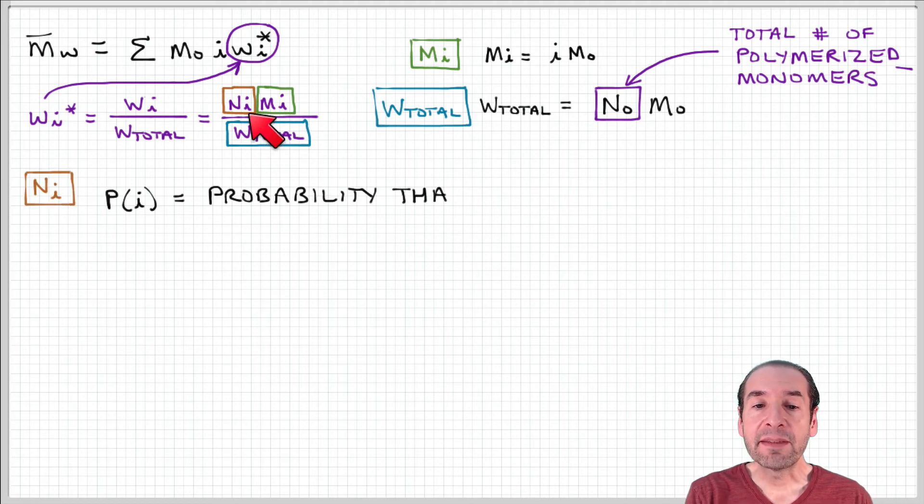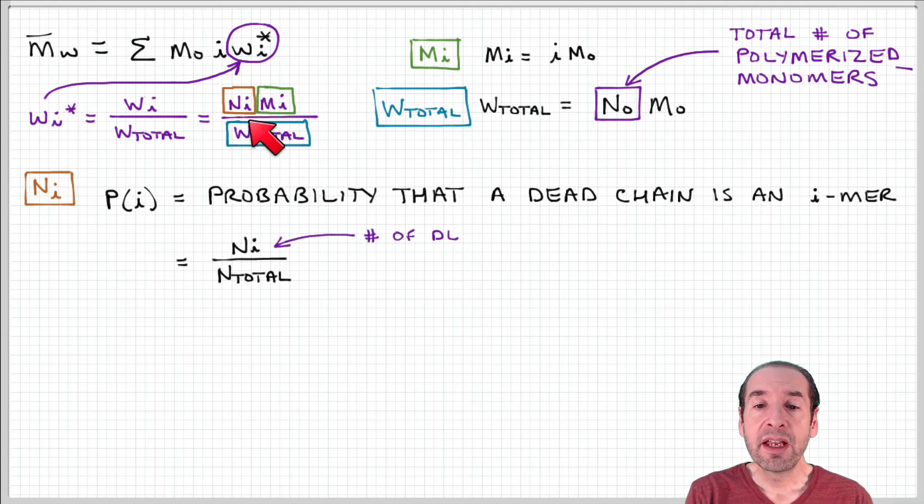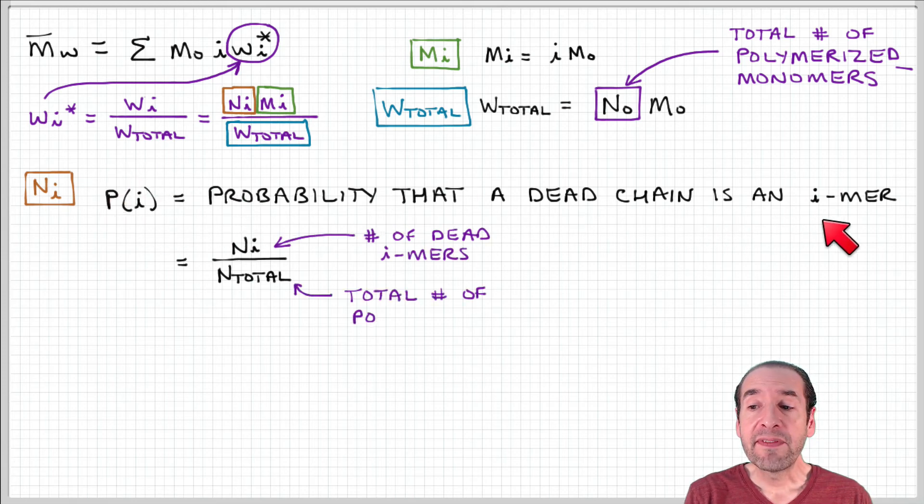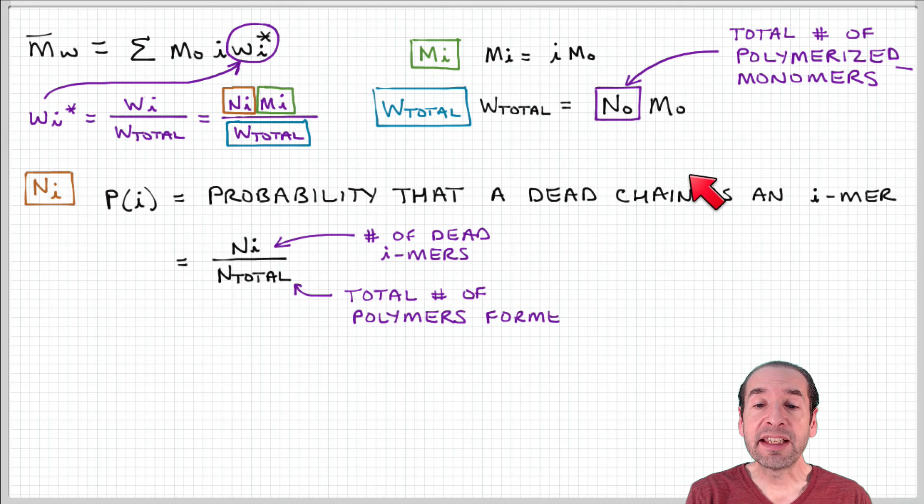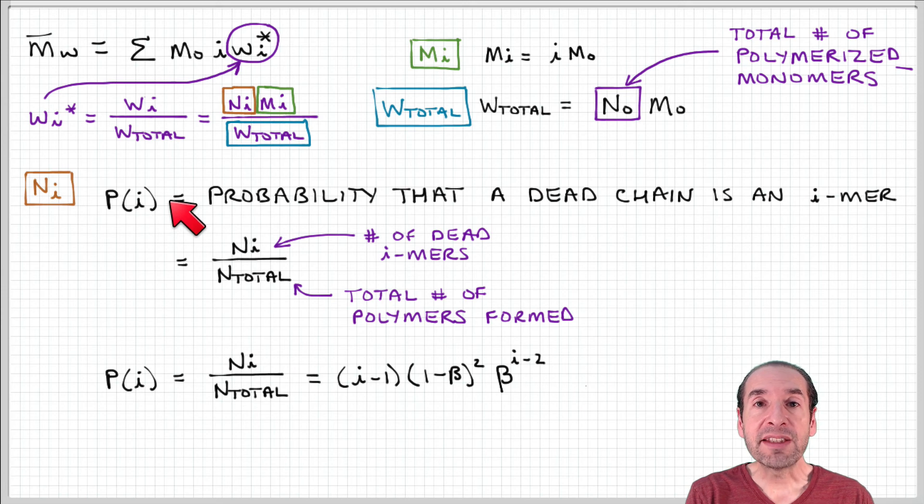Now let's take a look at this term NI. Remember, NI represents the number of chains that have length I. We can define a probability that a dead chain has a length I. We can obtain this from our population by noticing that this equals the ratio of the number of dead chains that have length I over the total number of dead chains - NI over N total.